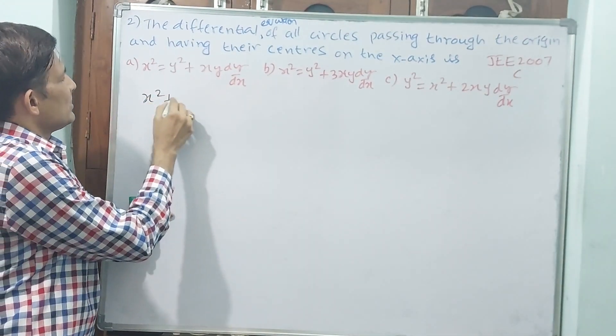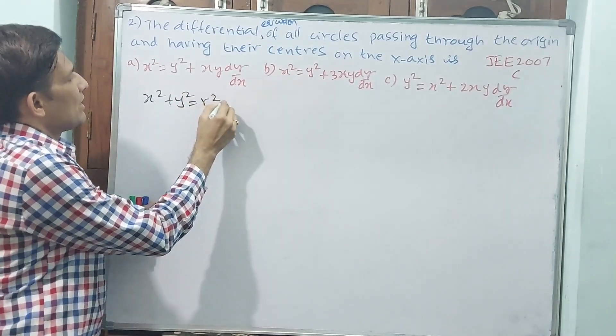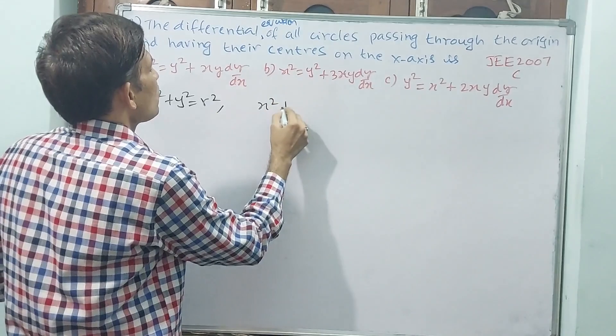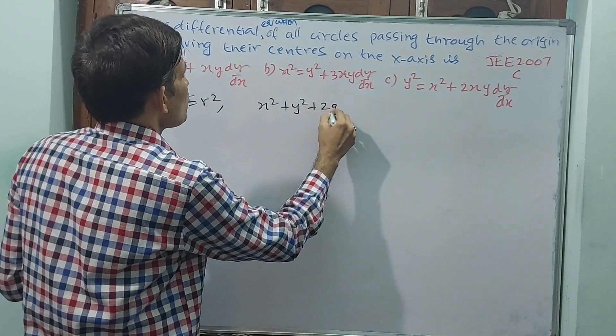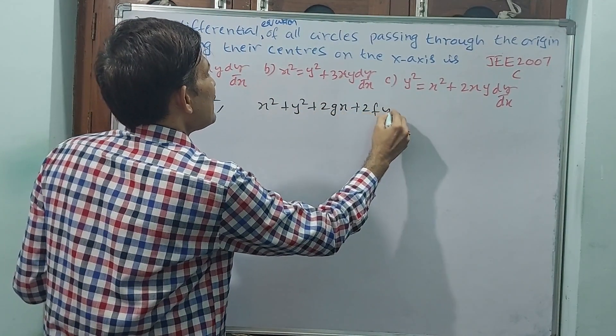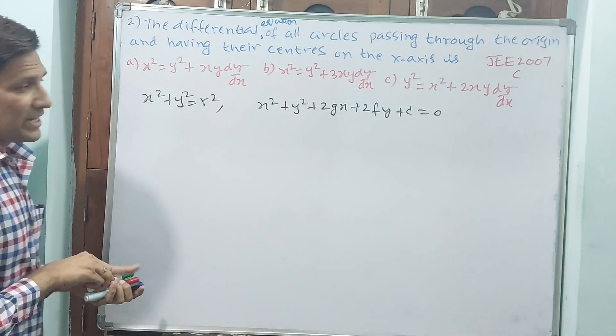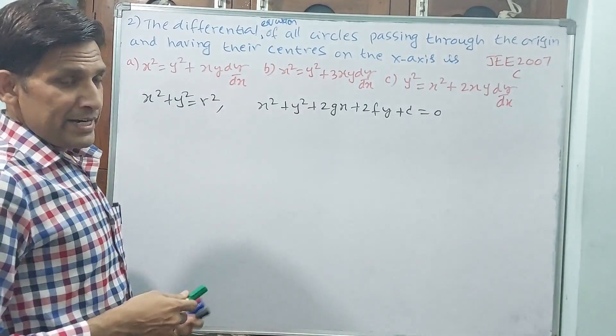See, we have got this equation: x² + y² = x². This is one equation. Another equation is: x² + y² + 2gx + 2fy + c = 0. This is also there. This is our standard equation only.